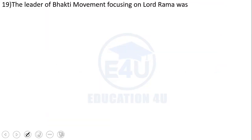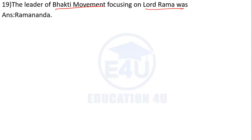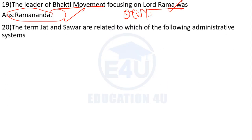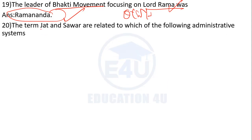The leader of the Bhakti movement focusing on Lord Rama was Ramananda. Jagir and Zawar are related to the Mansabdari administrative system.